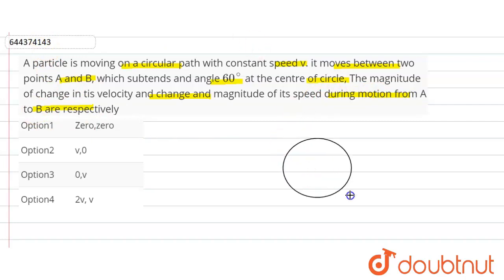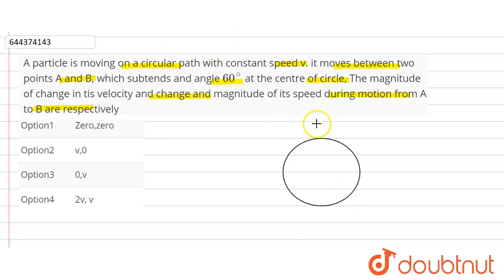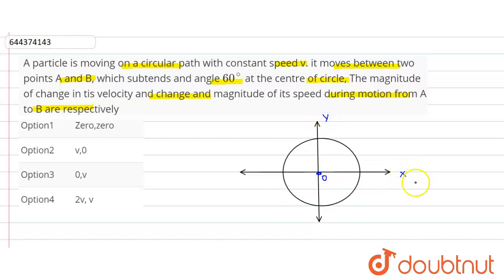So let's assume this is our circular path, and here we draw the x-y coordinate. Let's assume this is our center O, this is the x-coordinate, and this is the y-coordinate. We know i-cap is the unit vector along x and j-cap is the unit vector along y.